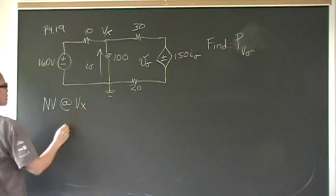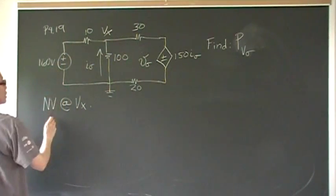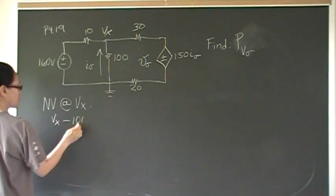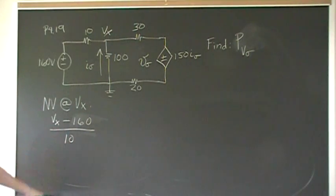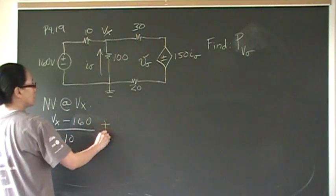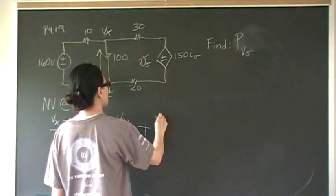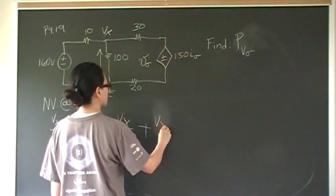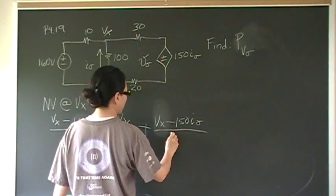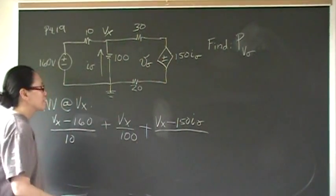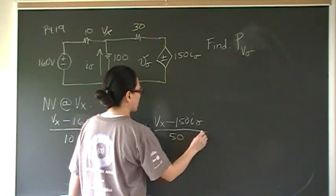Now we're going to write our node voltage equation at V_x — that's the sum of all the currents away from the node. The first current is V_x minus 160, divided by 10. Remember V over R is a current, so that's a current term. Then we have V_x over 100. Then we have V_x minus 150·I_delta, divided by — we have two resistors in series here, so we add them together, and that's 15. All of that equals zero.